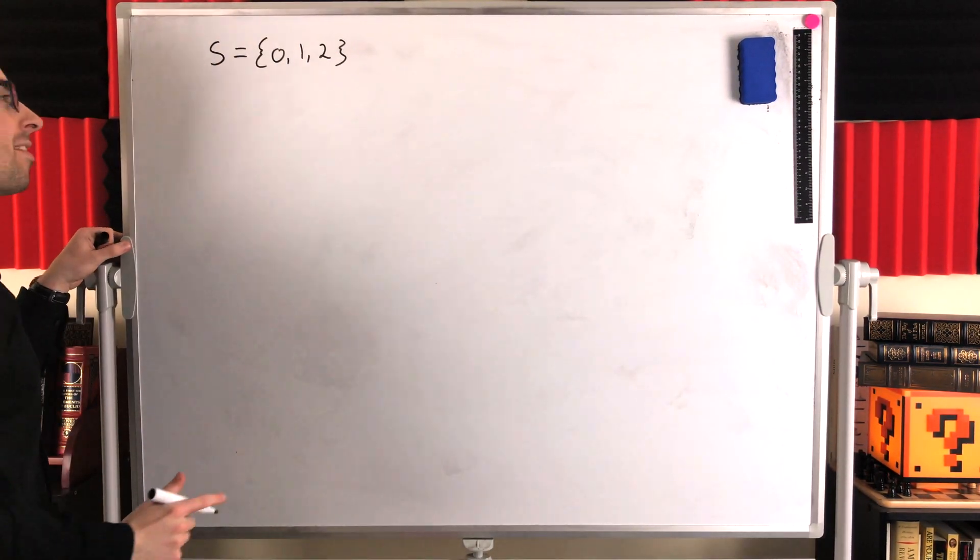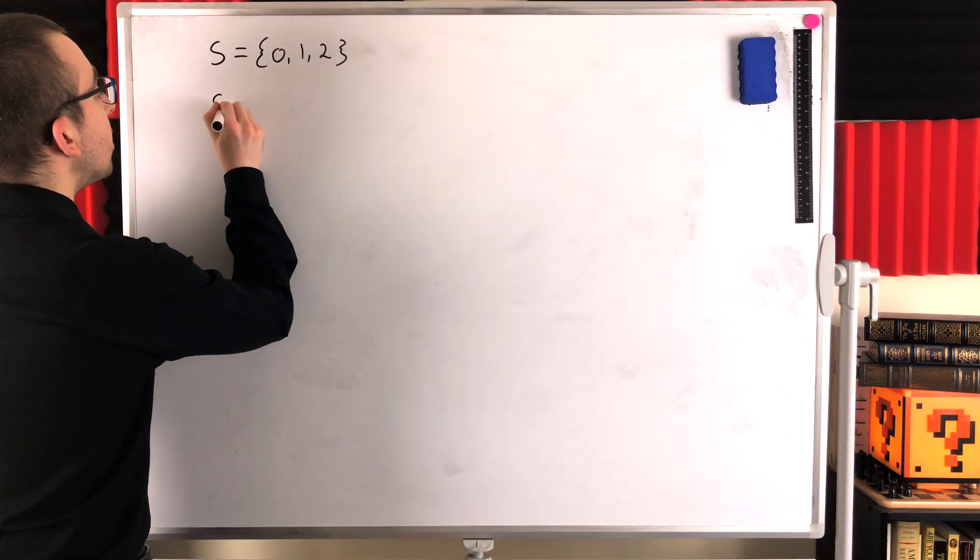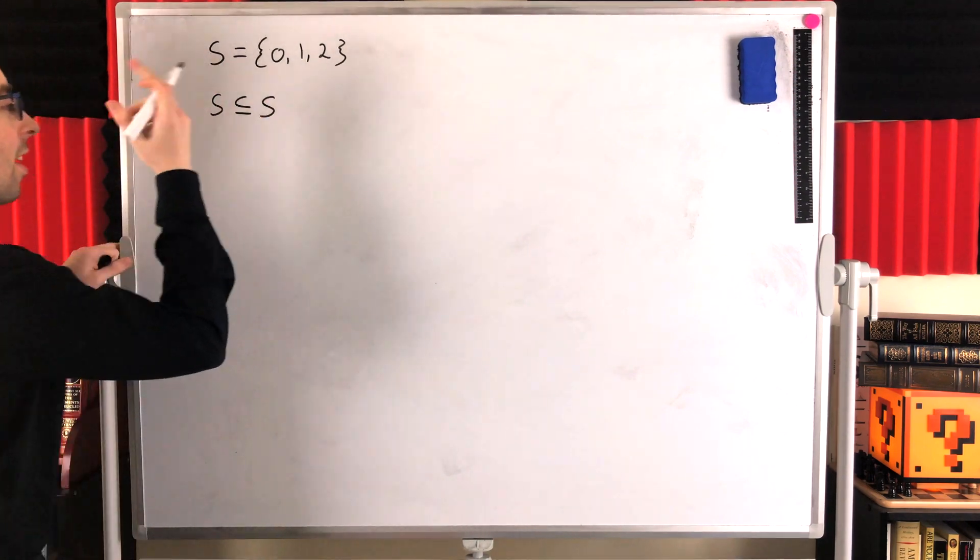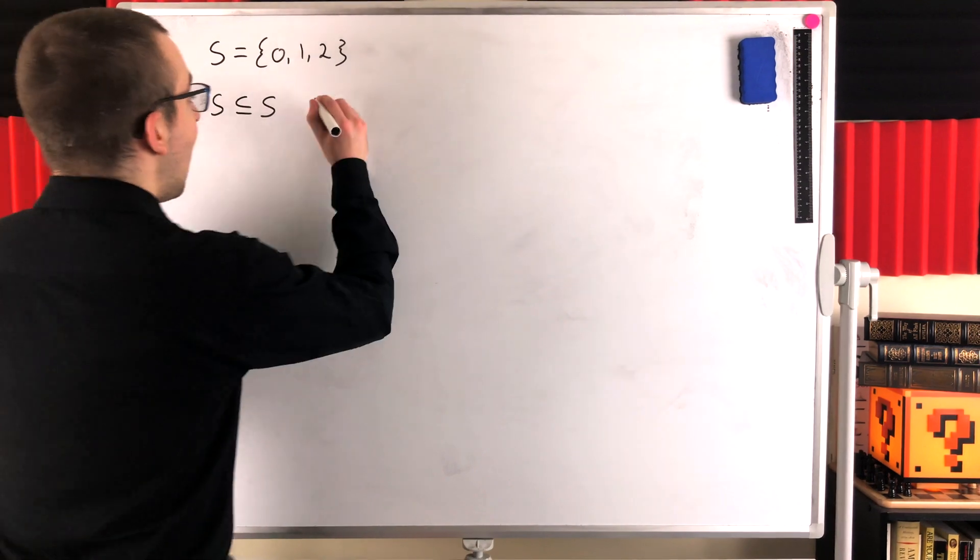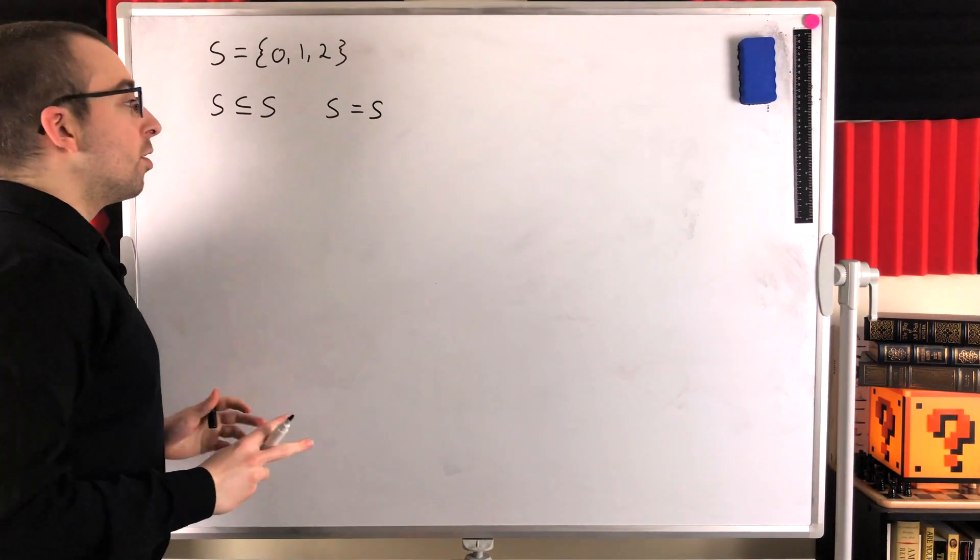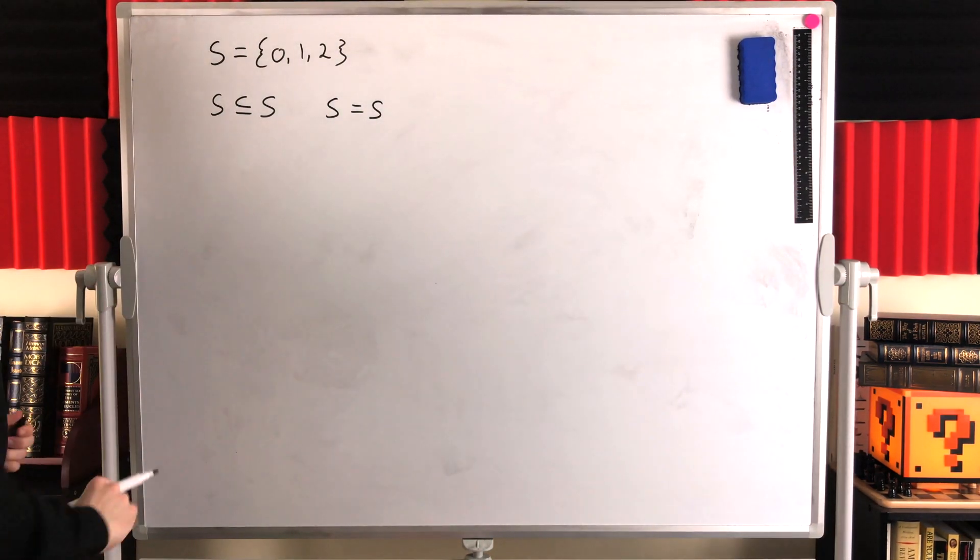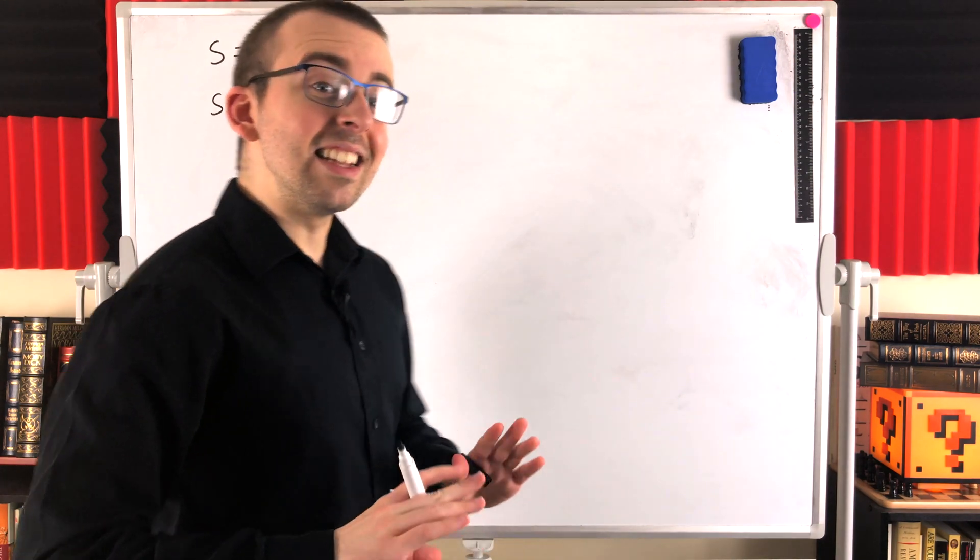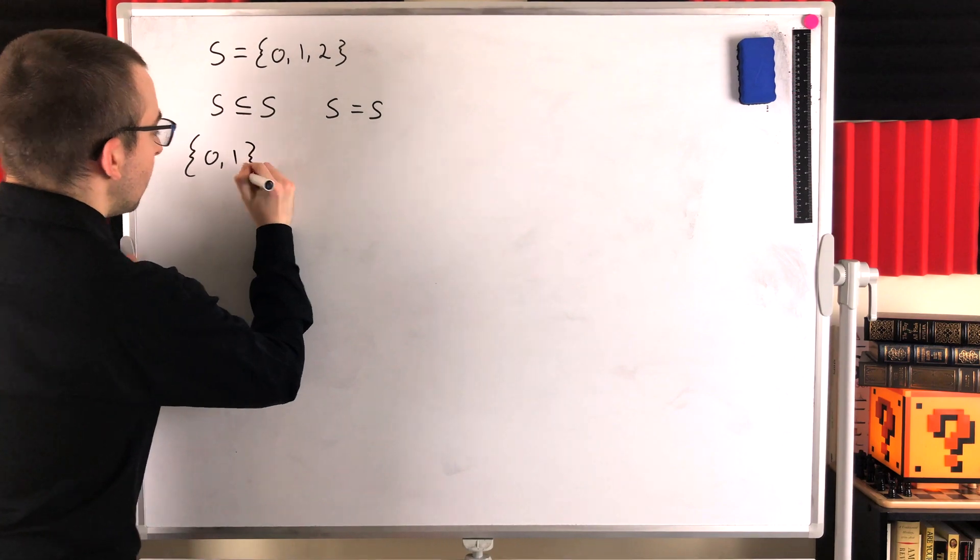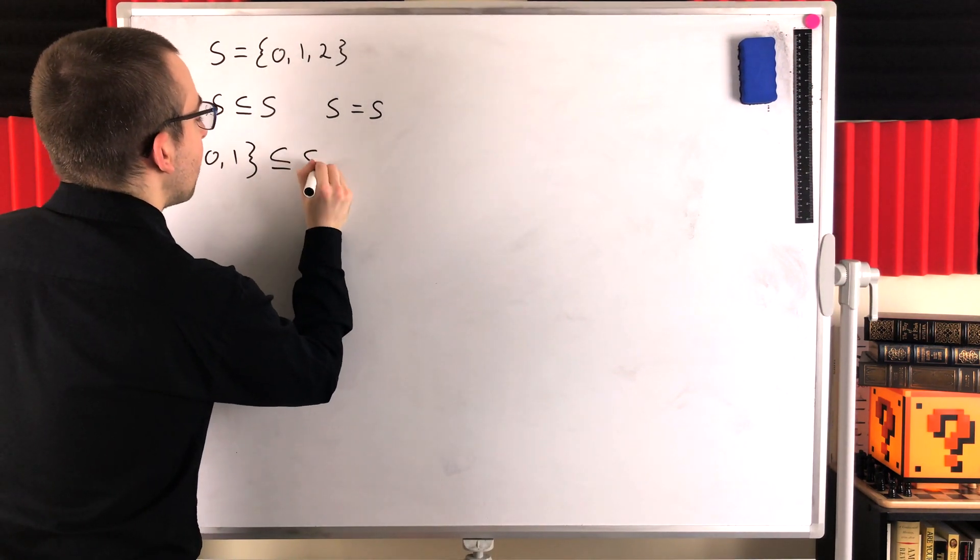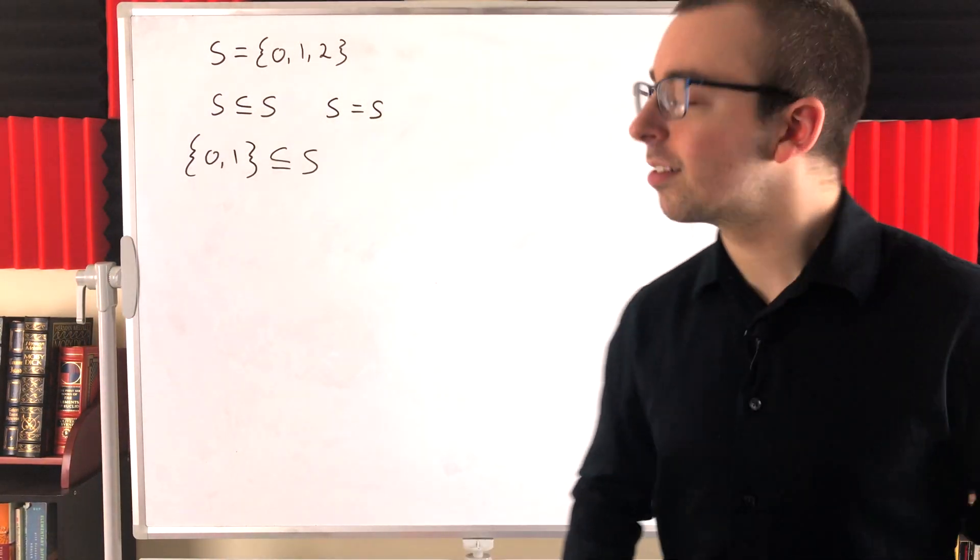So, say we've got this set S containing the elements 0, 1, and 2. One of my favorite sets. We could say, of course, that S is a subset of itself, because every element in S is in S. However, S is equal to S. So, S is an improper subset of itself. A proper subset of S would be a subset of S that isn't equal to S. For example, the set containing 0 and 1. This is a subset of S, but it's also not equal to S. So, we would call it a proper subset of S.